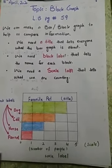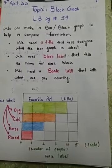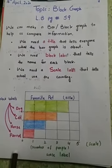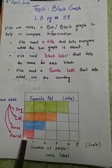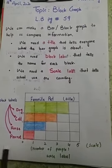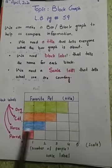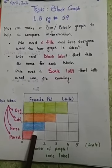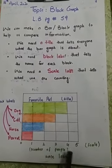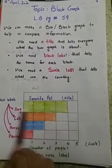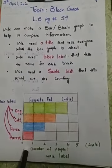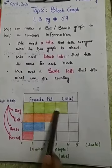The scale tells us what we are counting and how many things there are. For example, if I want to know about a favorite pet — if only one block is colored, it means only one person likes parrot. Two blocks colored means two people like horse. Three blocks mean three people like cat. Four blocks mean four people like dog as a pet. You count the colored blocks to get your answers.